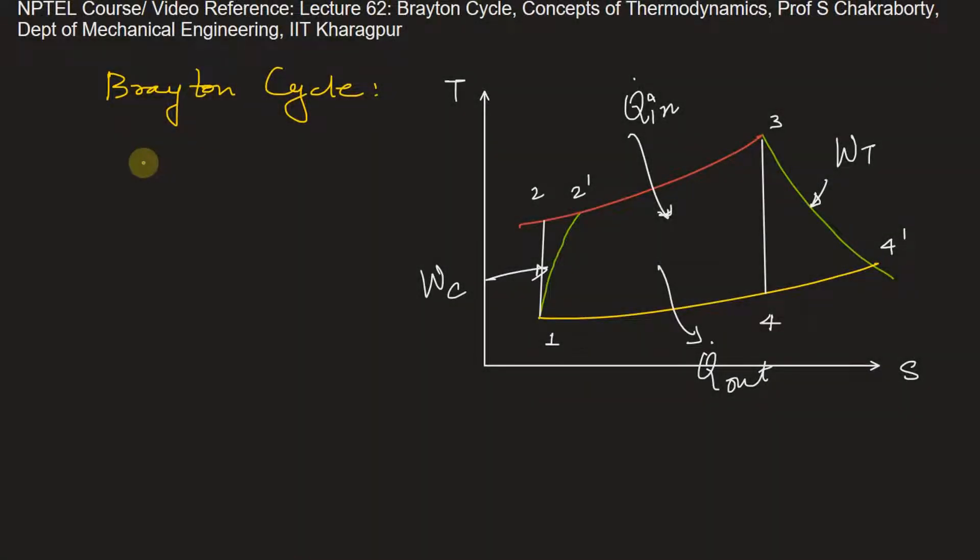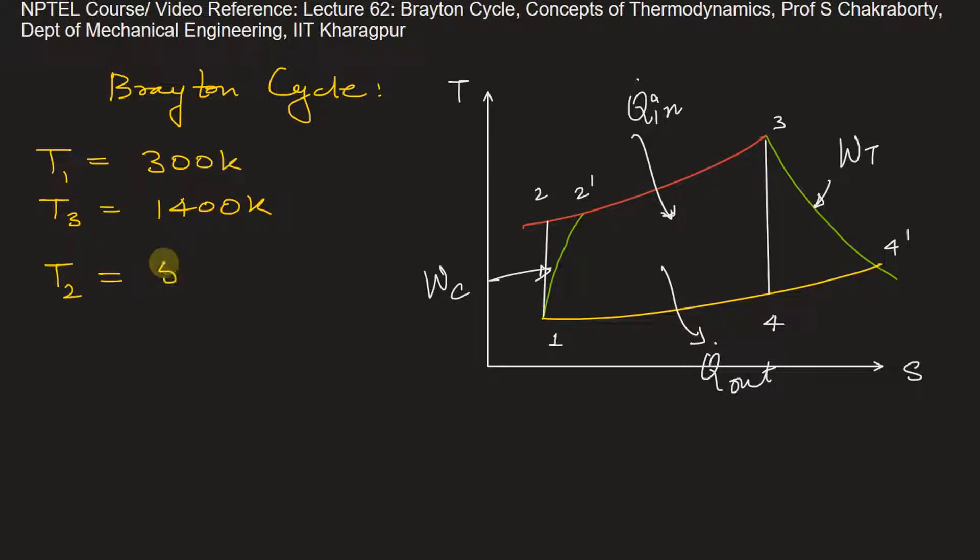Now in question number 54, we have already found some values. In the problem, it's already given T1 is equal to 300 Kelvin and T3 is equal to 1400 Kelvin. Also in previous question, question number 54, we have found the value of T2 using the isentropic relation. T2 we got was 543.43 Kelvin and T2 dash is equal to 604.3 Kelvin. And the work done by the compressor that we obtained was 304.3 kilowatt per kilogram.